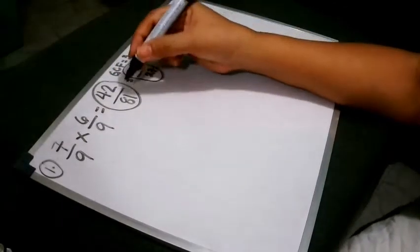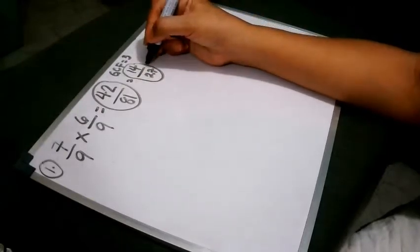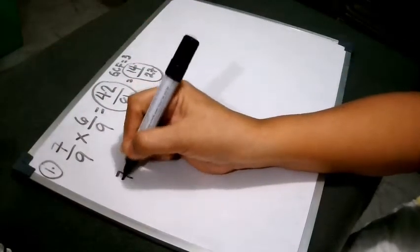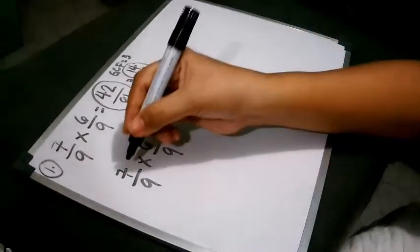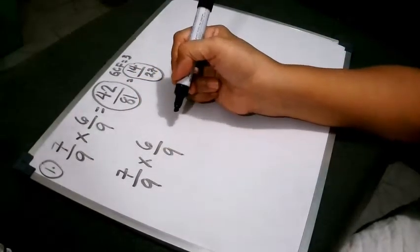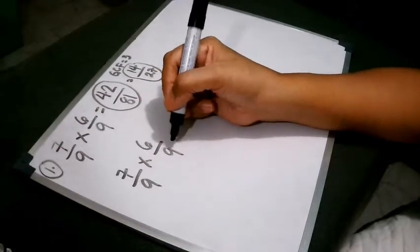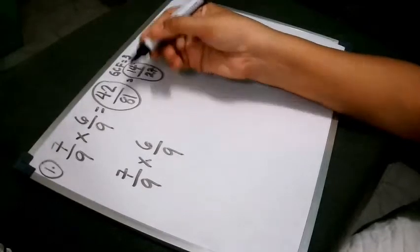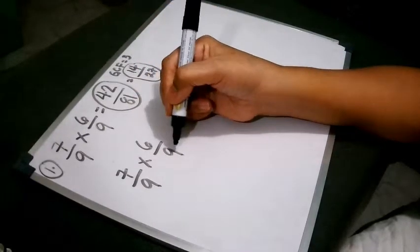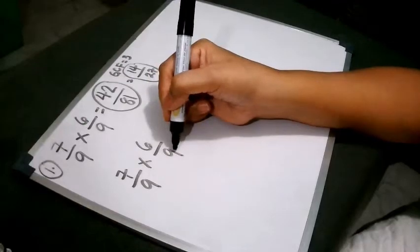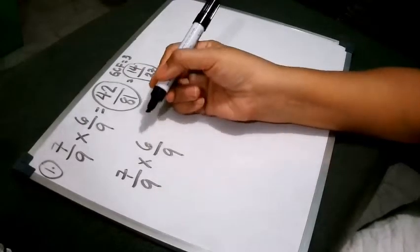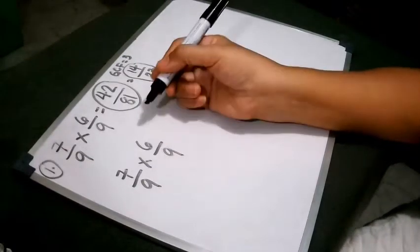But do you know that there is another way of multiplying this that we can still derive this answer? We will use the cross-cancellation method. In the cross-cancellation method, 7/9 times 6/9, find two numbers which have the same greatest common factor. In this sense, we can see 6 and 9. We will use this one so that we can comply with the cross-cancellation term.